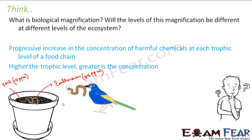And now when this earthworm was in turn eaten up by this bird — just imagine, because this bird is not going to eat just one earthworm. One earthworm is not going to be enough for the bird; she is going to eat too many earthworms. And every earthworm is going to have too much concentration of DDT. So it was found that inside the bird, the concentration increased up to 250 ppm. And DDT is a harmful chemical, so if its concentration is too much, it is going to be harmful to that organism.